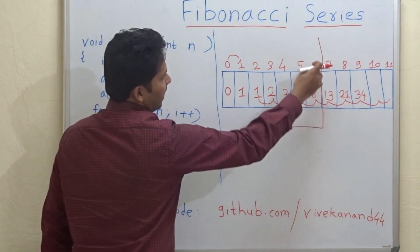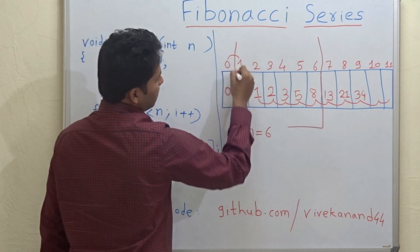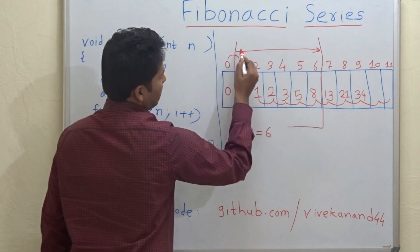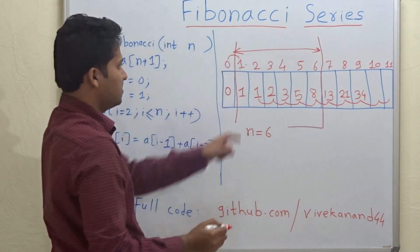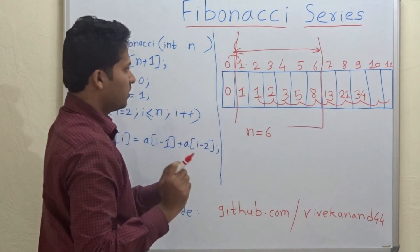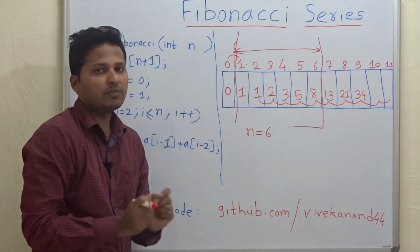And you have to print the Fibonacci series from the first element to the sixth element. So this is your answer in this case when your n is 6. Remember that this 0 we have taken for programming purposes.